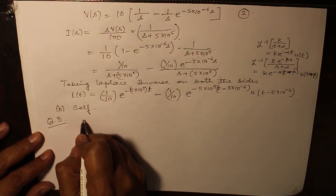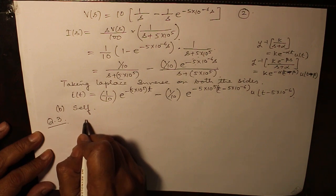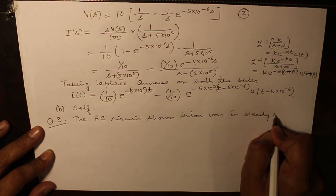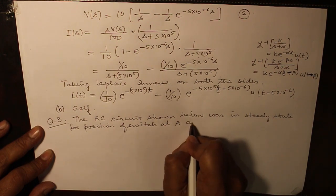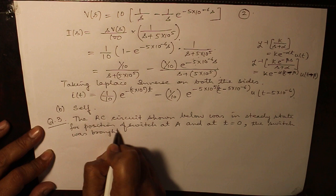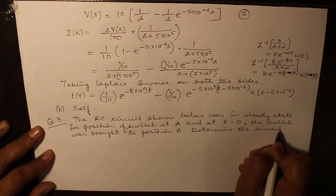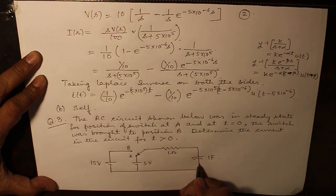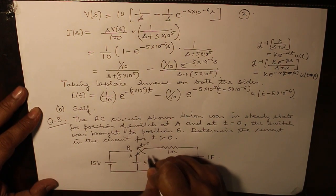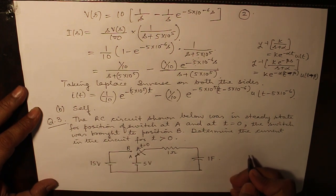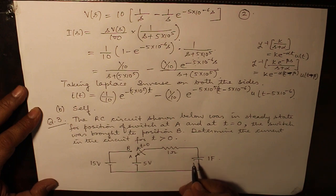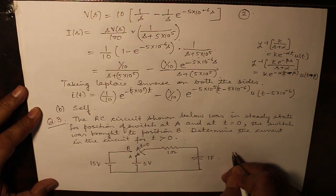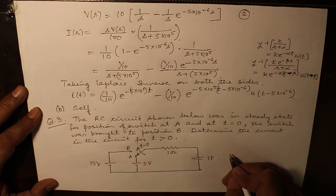The third type of question which comes from RC circuit is of the type where there is switching from one circuit to the other. The RC circuit shown below was in steady state for position of switch at A and at t equals zero the switch was brought to position B. Here, the basic requirement is we want to find out the voltage across the capacitor at the time of switching from A to B.